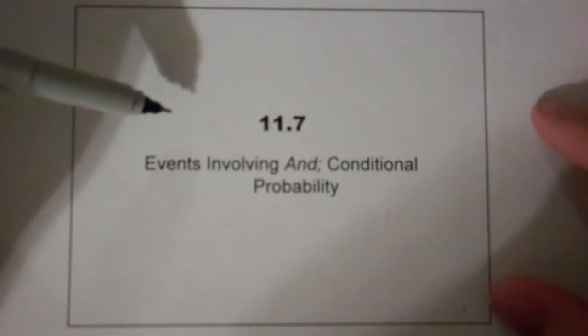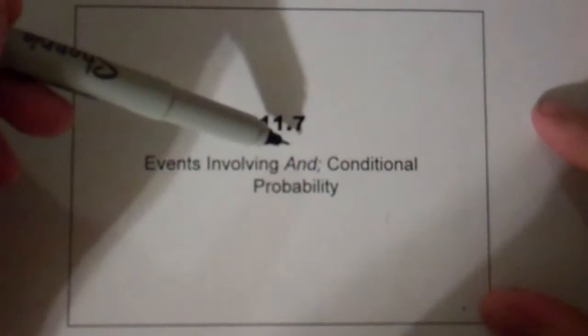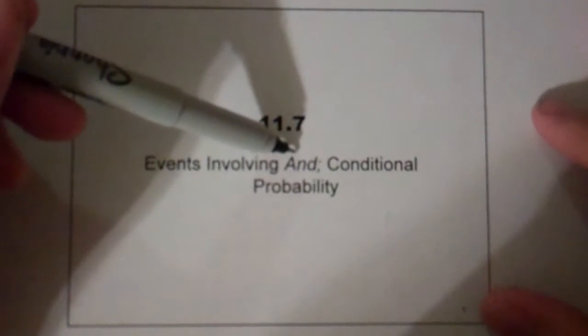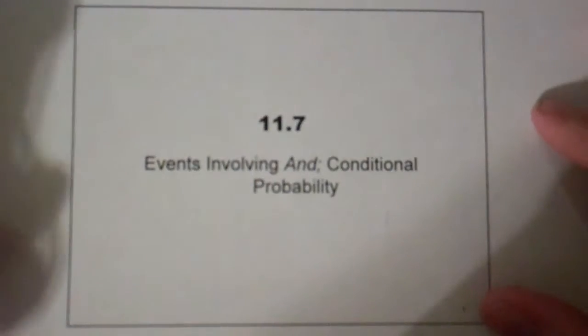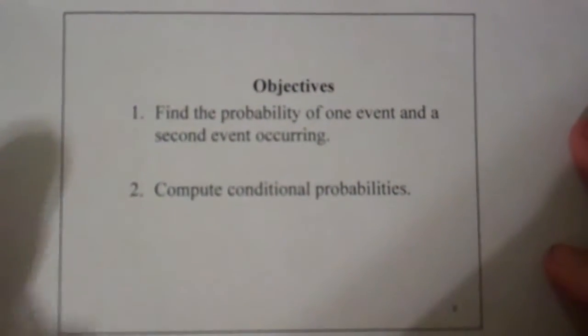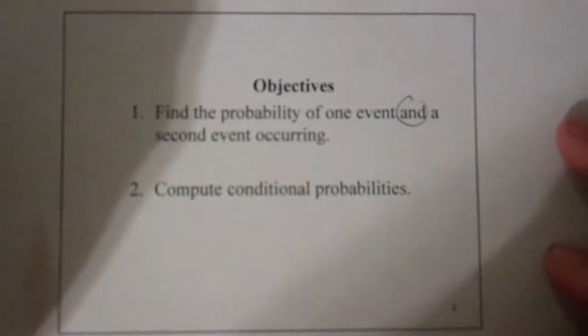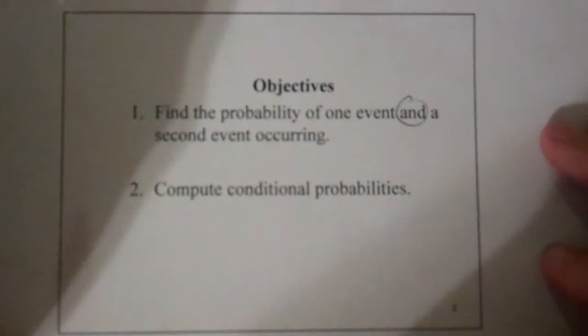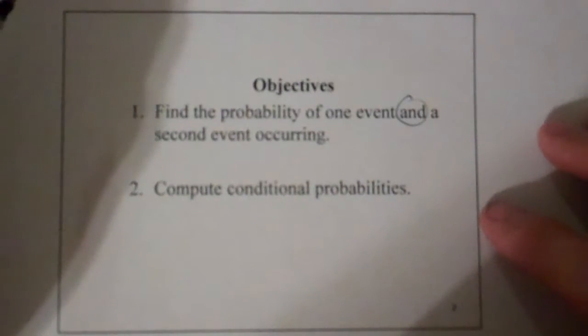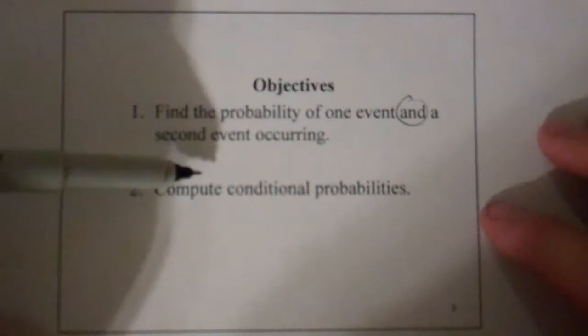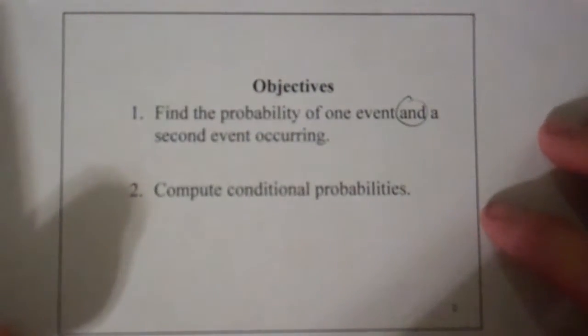Now we're on to 11.7. In the last video we talked about OR. Now I want to talk about AND and the idea of a conditional probability. We're going to find the probability of one event and a second event occurring. Notice the AND is very different from the OR — we're looking at two events, not the possibility of one or the other happening in a single event. And then we want to take that idea and extend it to conditional probabilities, and as you can see they're very similar.